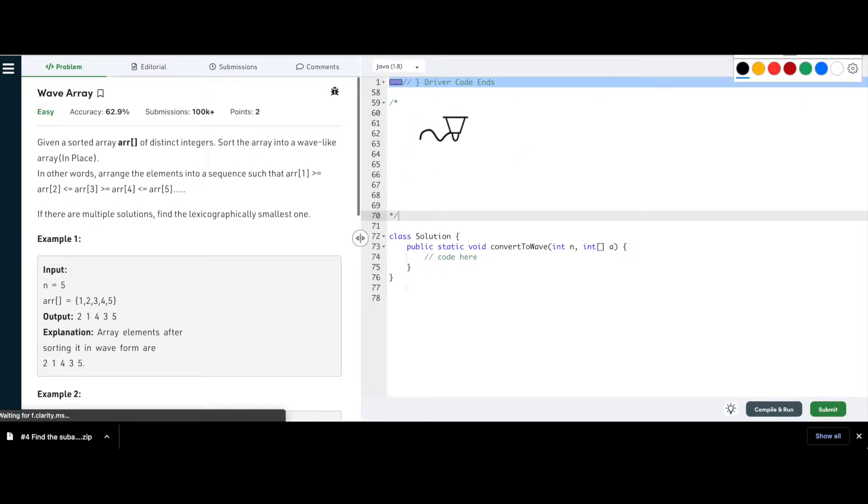The second element is going to be lesser than or equal to the next element. So how does a wave look? We talk of a wave, a wave looks like this. There's a high, there's a low, there's a high, there's a low. Something similar we have been asked to do.